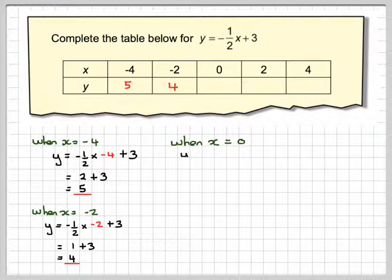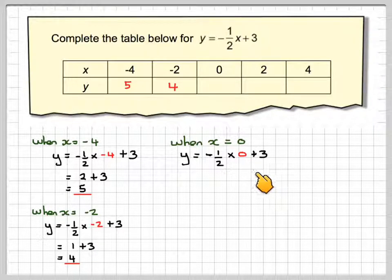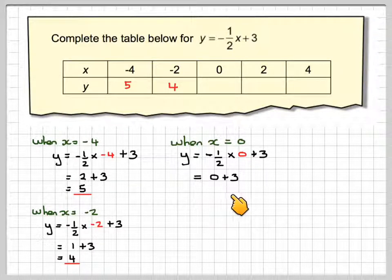When x is equal to 0, we're going to get minus one-half times 0 plus 3. Anything times 0 is 0, so we're going to have 0 plus 3, which is 3.